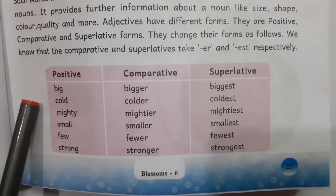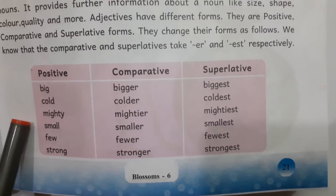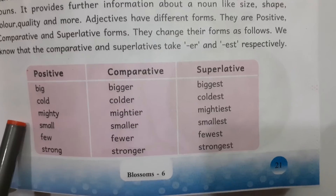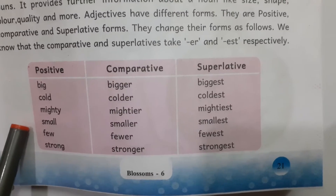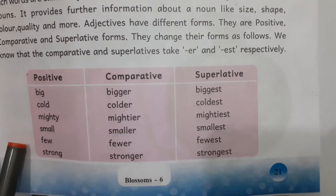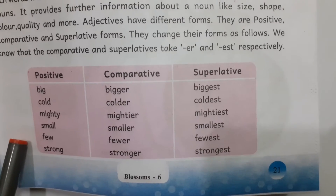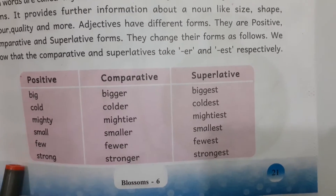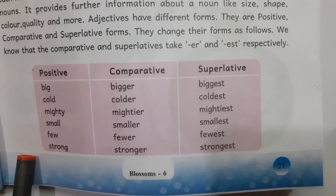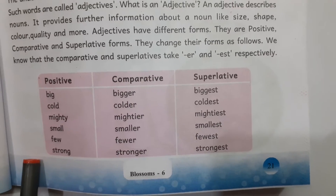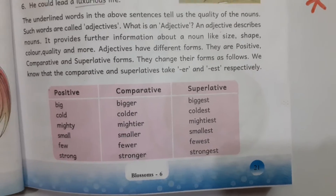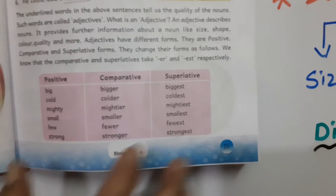More examples of the ER/EST pattern: cold, colder, coldest; mighty, mightier, mightiest; small, smaller, smallest; few, fewer, fewest; strong, stronger, strongest. Like this, we can frame the comparative and superlative adjective forms.